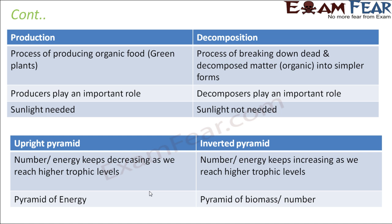Production and decomposition: production is the process of producing organic food, for example what is done by green plants. Decomposition is the opposite — the process of breaking down dead and decaying matter. Production is done by producers and decomposition is done by decomposers. For production sunlight is needed, but decomposition does not require sunlight.